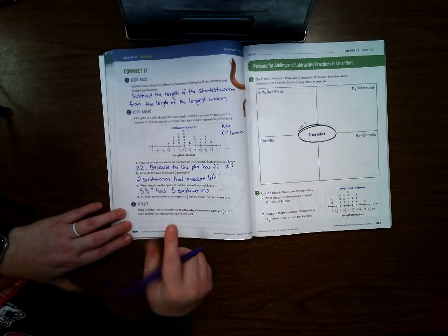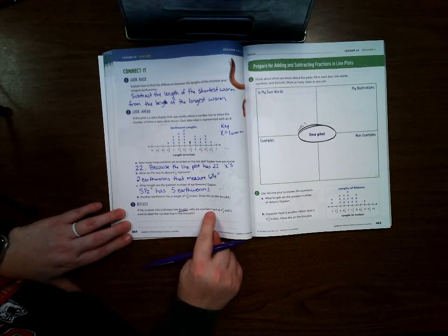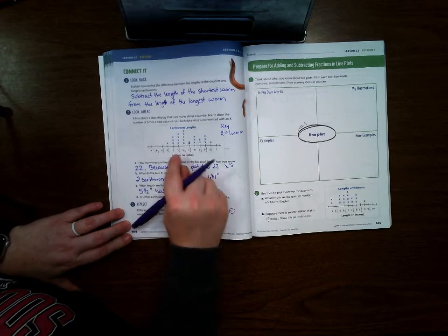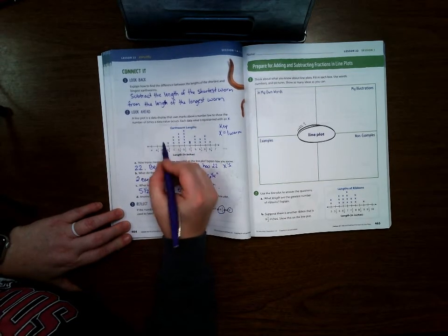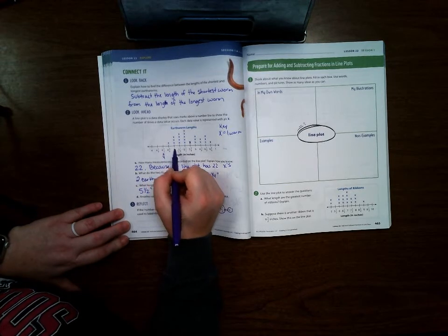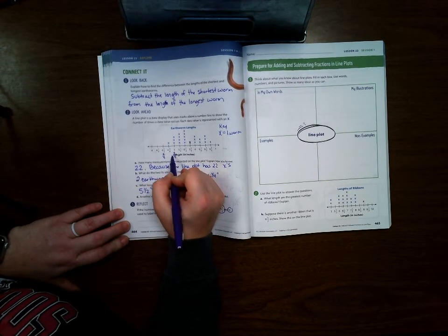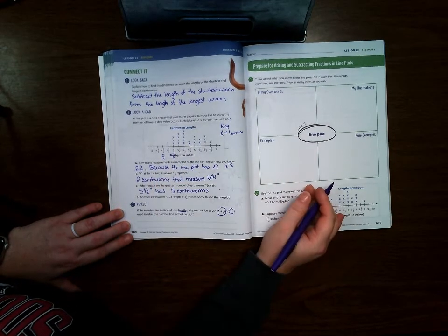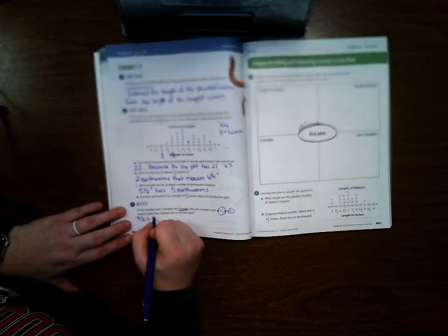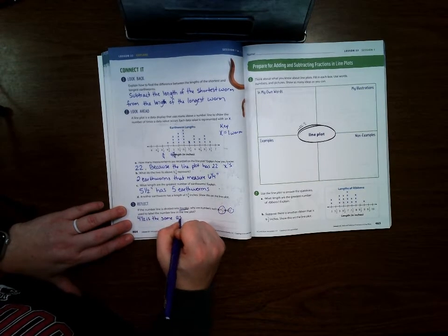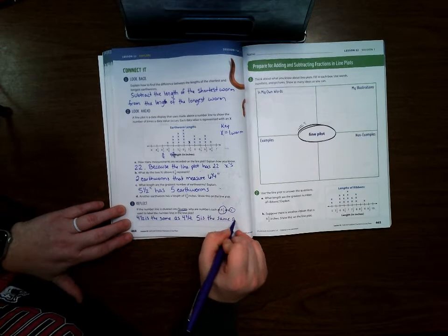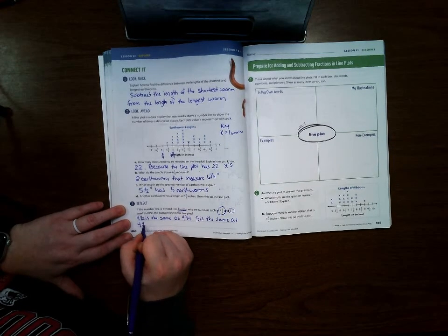Last one. If the number line is divided into fourths, why are the numbers such as four and one half and five used to label the number line? Well, four and one half, if you look one fourth, two fourths, three fourths. So one half is the same thing as two fourths. And when you get to the whole numbers, it's the same as four fourths. So an answer would be four and one half is the same as four and two fourths. Five is the same as four and four fourths.